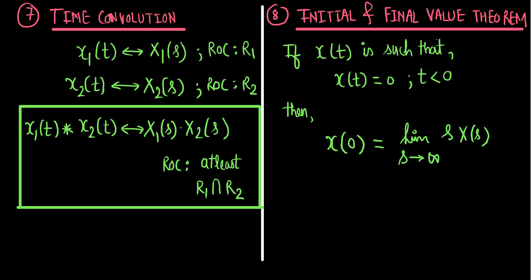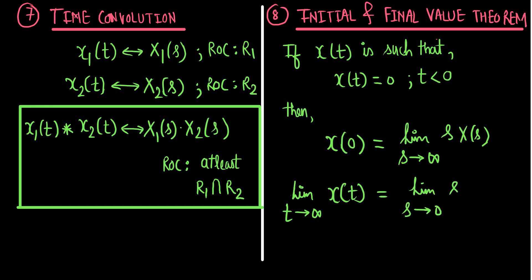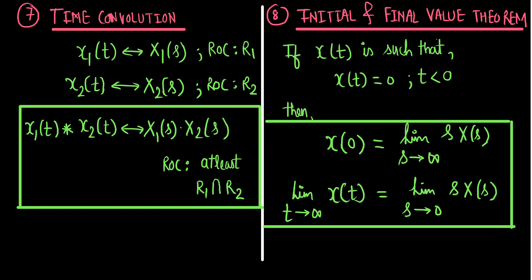Similarly, the final value theorem states: lim_{t→∞} x(t) = lim_{s→0} s·X(s). So the final value of x(t) as t approaches infinity is obtained by multiplying the Laplace transform by s and taking the limit as s tends to 0. These are the initial and final value theorems.